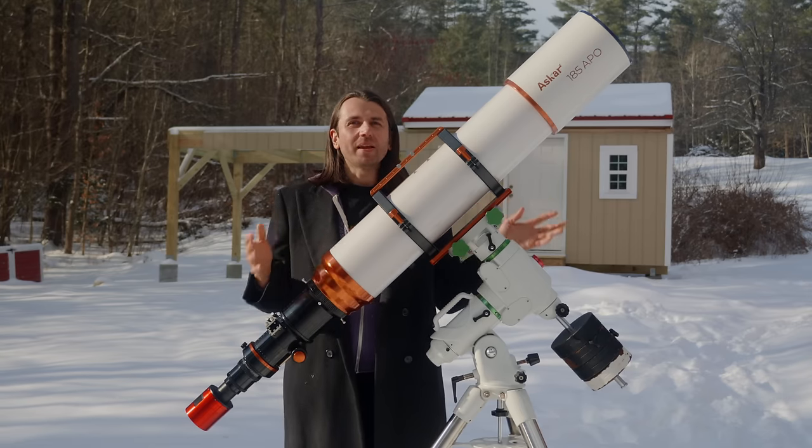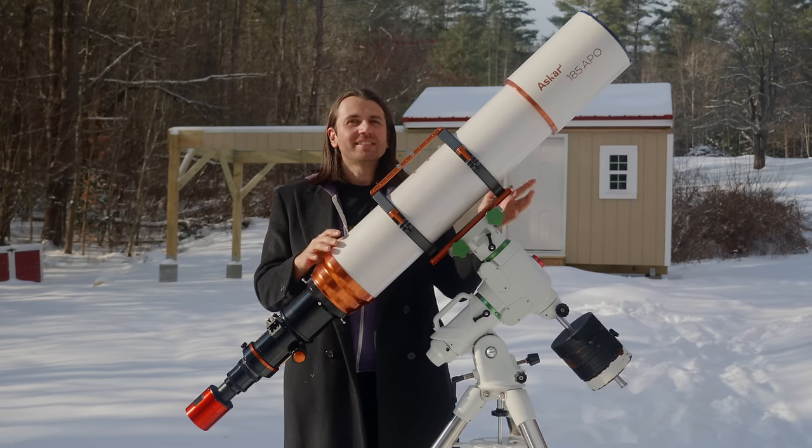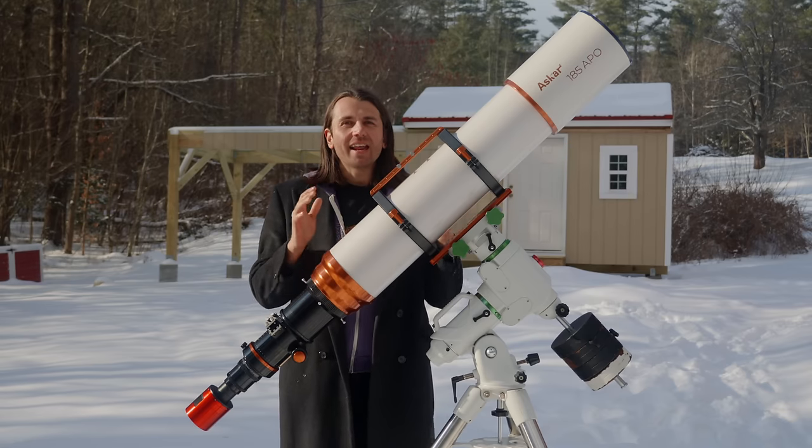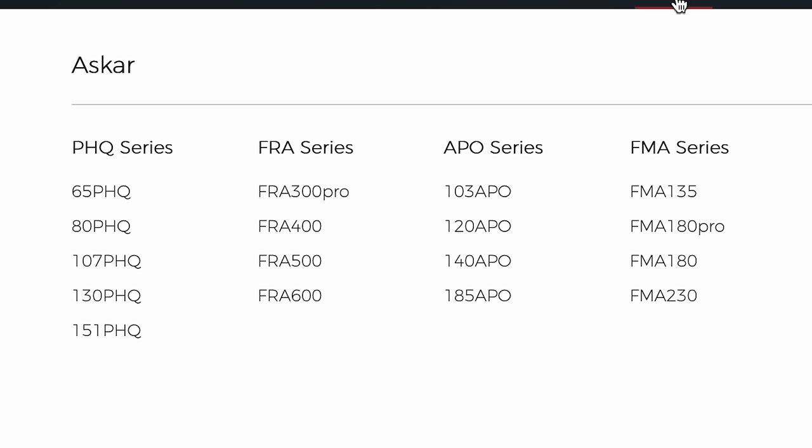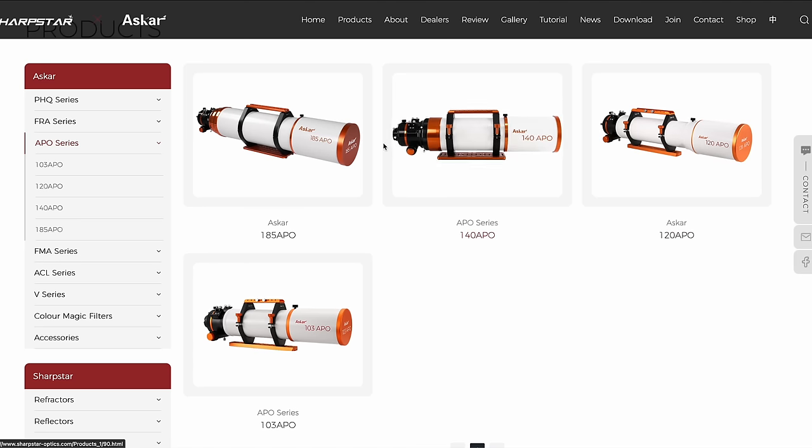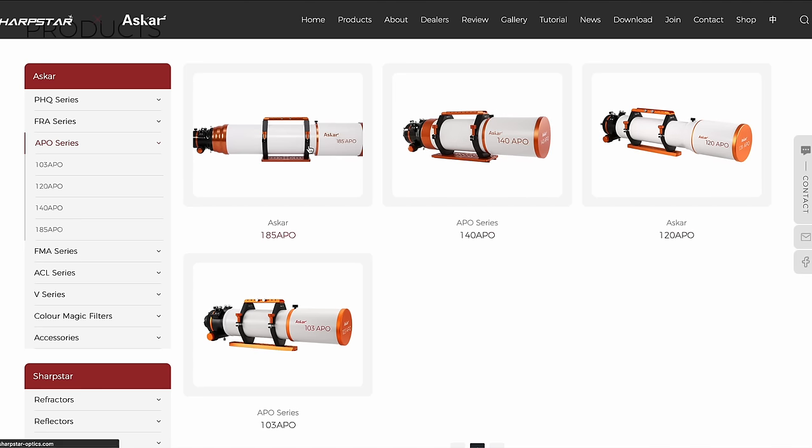So let's start with the basic properties and design of this telescope. This is an APO triplet refractor in Askar's fairly new APO triplet line which includes a 103, a 120, a 140 and now the 185.